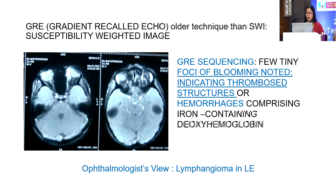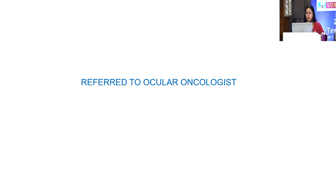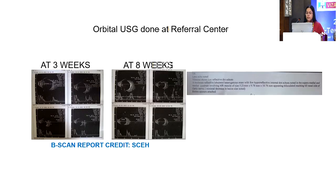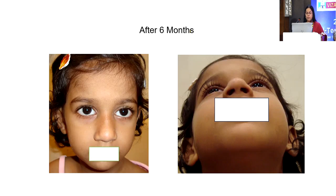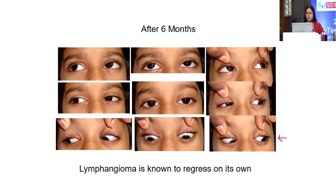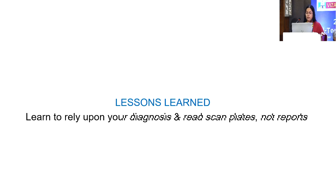Our view was that it could be a case of lymphangioma, but since rhabdomyosarcoma was raised I thought I should take a second opinion. At another center, a plain orbital ultrasound was done and they suggested we continue with albendazole therapy. After the third week the child started responding to treatment. After six months the patient was alright, and on revisiting the MRI and CT scans, it was probably a case of lymphangioma, which is well known to regress on its own.